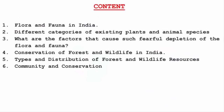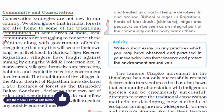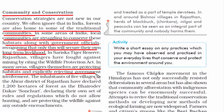The last topic is community and conservation. In India, many tribal communities live in forests and work hard to protect and conserve them — often more than urban society does. They face struggles alongside government officials to protect forests from threats like smuggling, encroachment, hunting, diseases, and pollution. In many places, villages themselves protect their habitat without government involvement. One example is villages in Alwar district, Rajasthan, which have declared their own rules prohibiting hunting and protecting wildlife against outside encroachments.